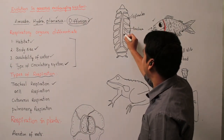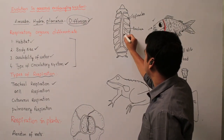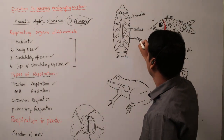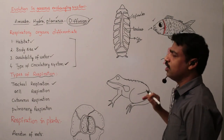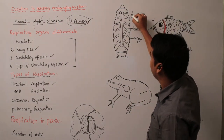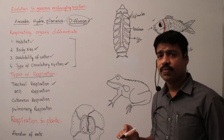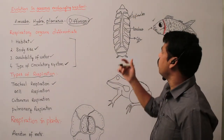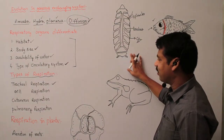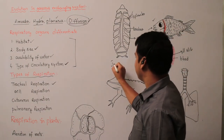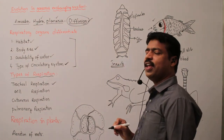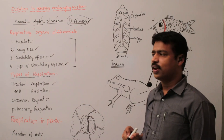Carbon dioxide is expelled out through the tracheal system and through the spiracles. At the same time, oxygen enters into the body through the spiracles. This tracheal system is seen in insects, and we observe tracheal respiration in insects.